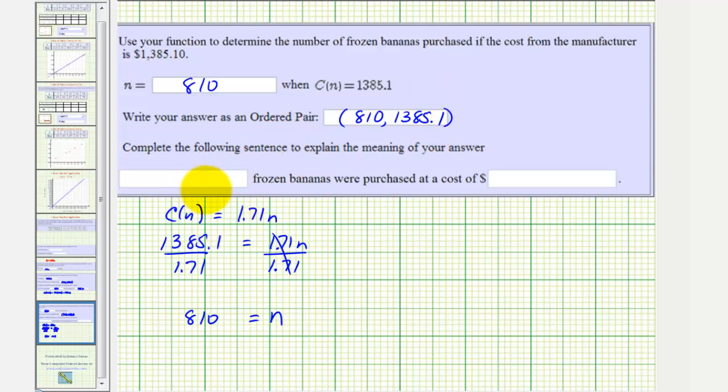The meaning of this is that 810 frozen bananas were purchased at a cost of 1,385 dollars and 10 cents. And once again, notice how the dollar sign is already included for us. I hope you found this helpful.